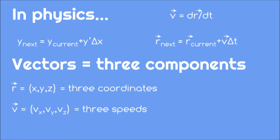For the velocity, the three components are the speeds vx, vy, and vz. Even though vectors are slightly more complicated than single numbers, the Euler-Cromer method still works.